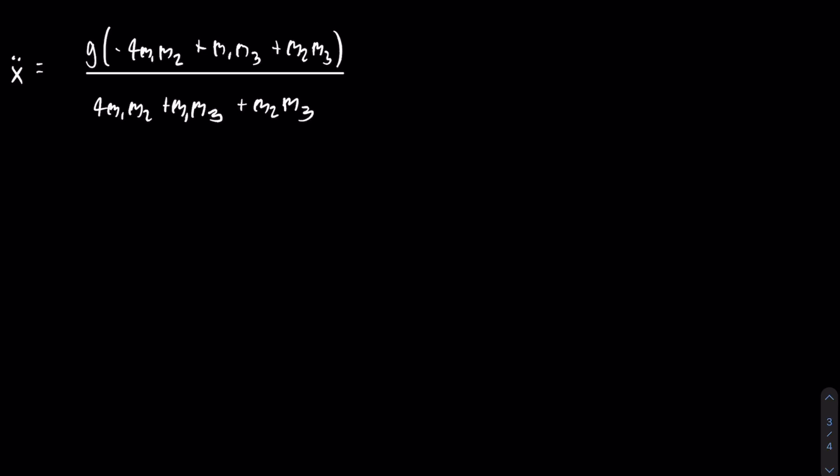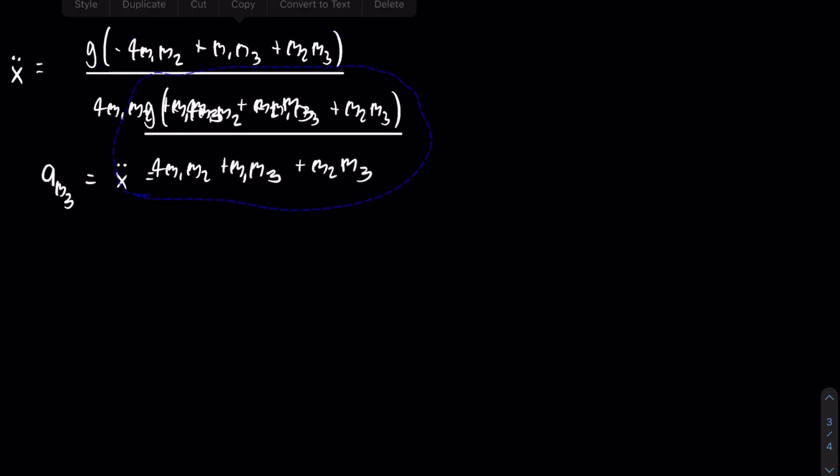The position of this mass is just the x coordinate. So this makes it really easy. I just have to write the acceleration of mass three is equal to x double dot. And that is just equal to what I have directly above it.